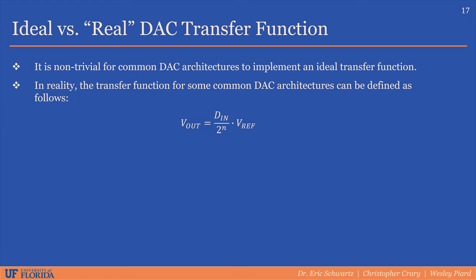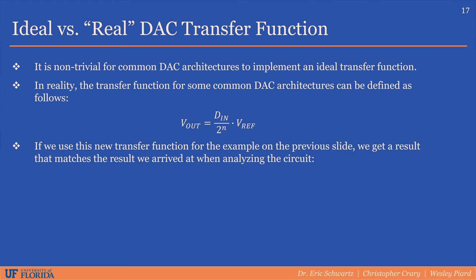The main difference is that we divide by 2^n, instead of 2^n minus 1. Let's try applying this new transfer function to the example from the previous slide. Instead of 2.86 volts, we actually get 2.5 volts, which matches the result we got from analyzing the circuit.